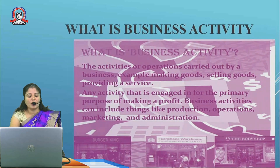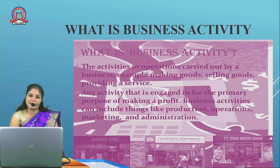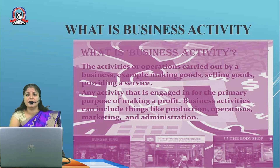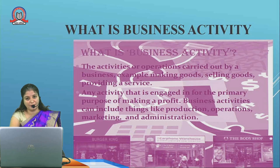The next part: what is business activity? Business is one of the activities related to production and selling of goods and services. Business consists of industries also — industry is a part of business. Business industry refers to the production of goods and services, where we develop various innovative ways of producing goods and services. Business activities include production, operation, manufacturing, administration, and marketing.